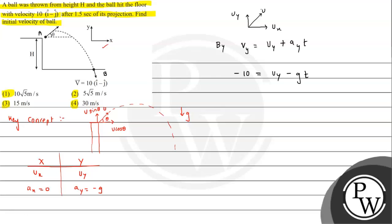Minus 10 equals uy minus 10 times 1.5, so minus 10 equals uy minus 15. Therefore uy equals 5. So this is ui, which is 5j cap meter per second.